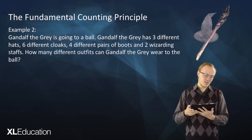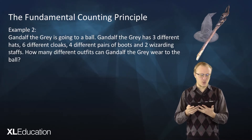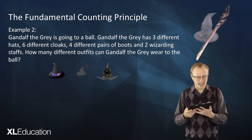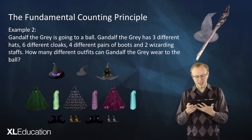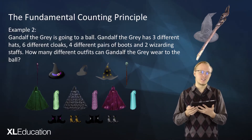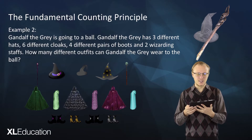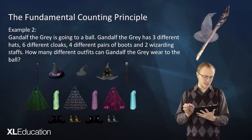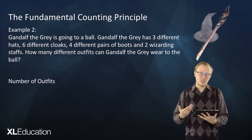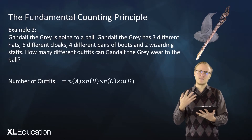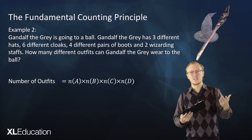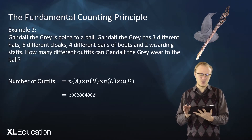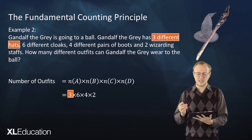Example two: Gandalf the Gray is going to a ball. Gandalf the Gray has three different hats, six different cloaks, four different pairs of boots, and two wizarding staffs. How many different outfits can Gandalf the Gray wear to the ball so he can make sure he looks fabulous? We're going to apply the fundamental counting principle with four events. The first is choosing a hat — he can do that in three ways.